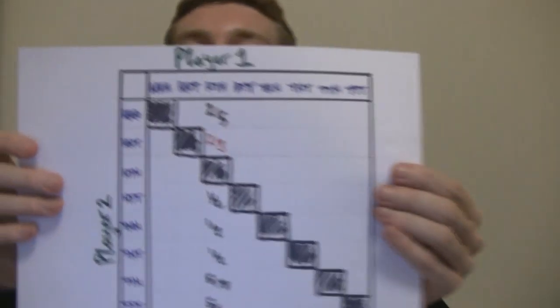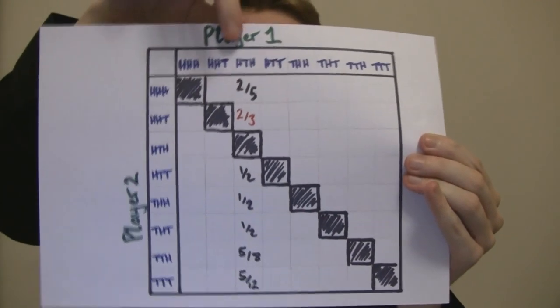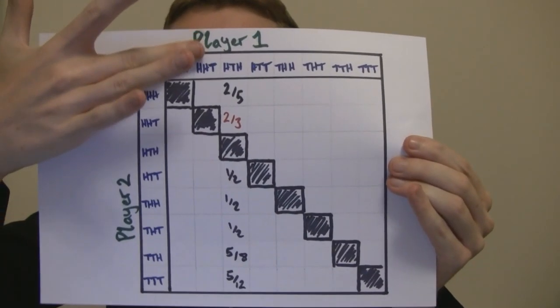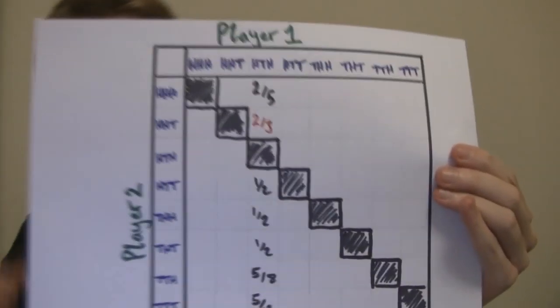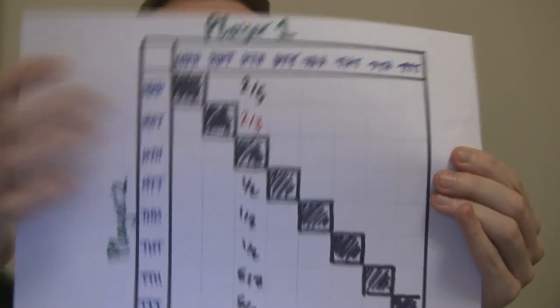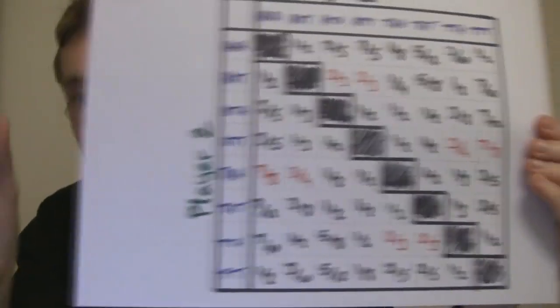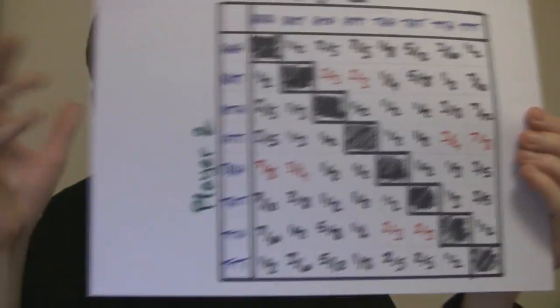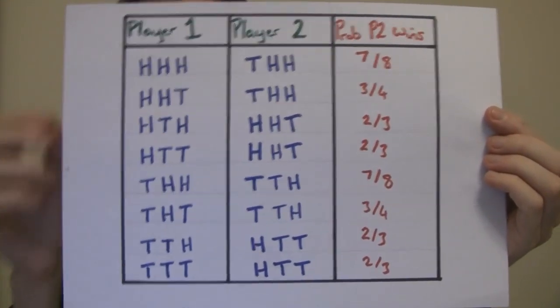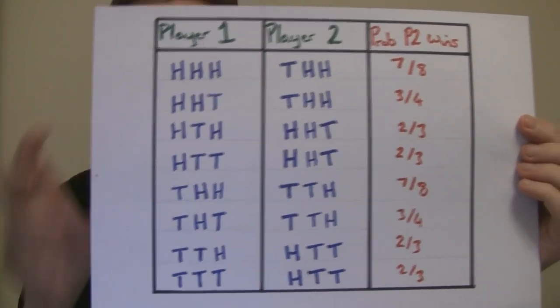If player one picks heads, tails, heads, player two has eight choices. You can work out the probability that player two wins in each case. The best choice for player two is heads, heads, tails — this gives the best probability. You can fill in the other columns the same way to find the best choice each time. The best choices are highlighted in red, and this tells us the optimal strategy for player two to maximize his chances of winning.